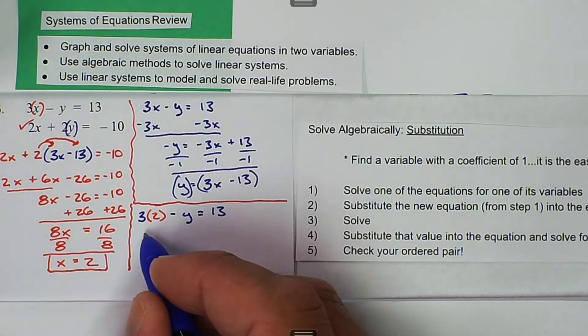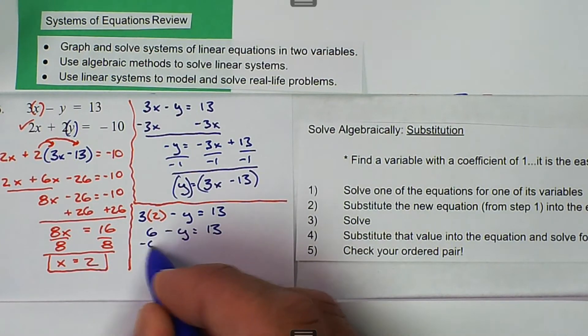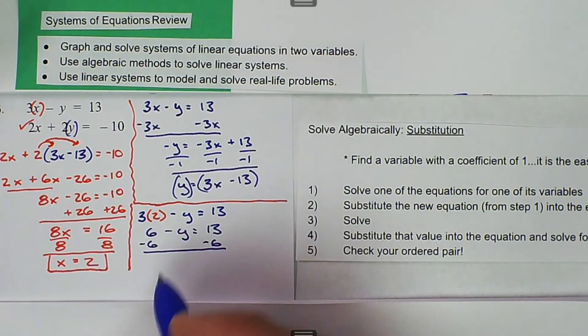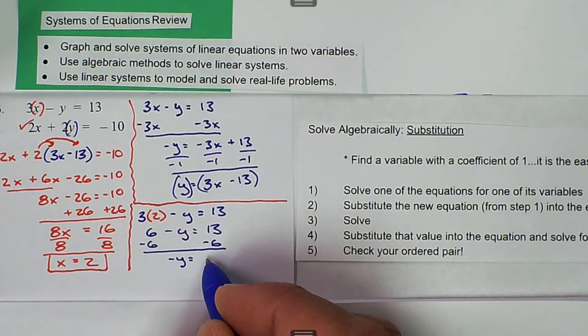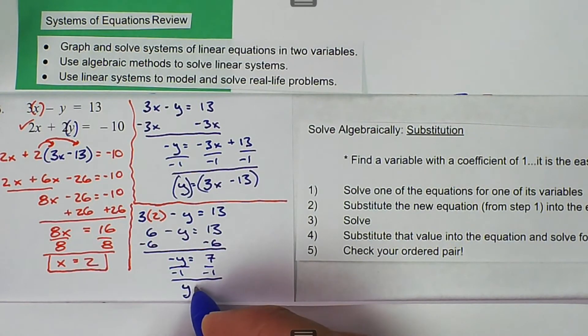Then we get 6 minus y equals 13. Subtract 6, and we get negative y is equal to 7. Divide by negative 1, and we get y is equal to negative 7.